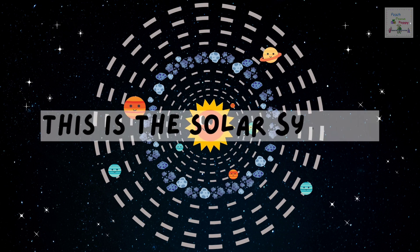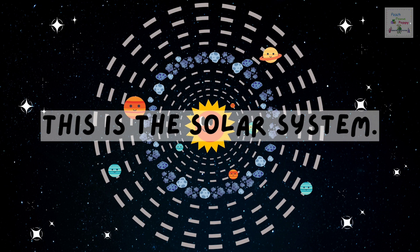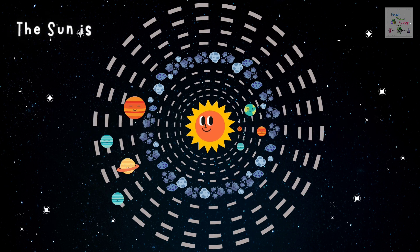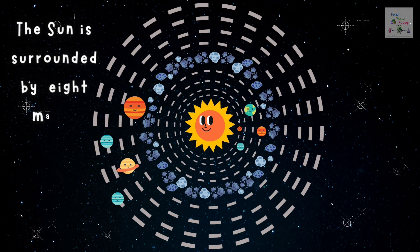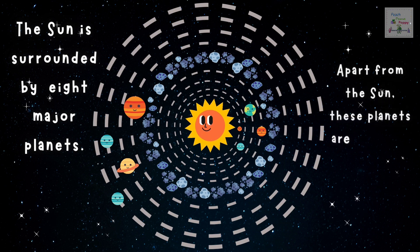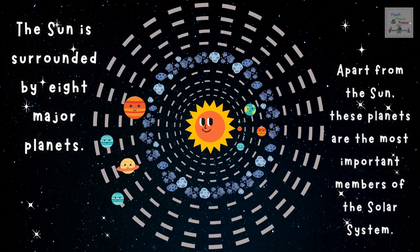This is the solar system. As you can see in this picture, the Sun is surrounded by eight major planets. Apart from the Sun, these planets are the most important members of the solar system.